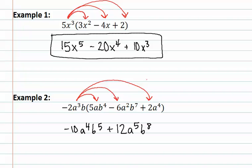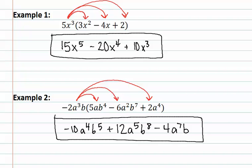We then distribute to the very last term and we have negative 2 times a positive 2, which gives us a negative 4. We then have a to the third and a to the fourth, which gives us a to the seventh. Finally, we have one b from the beginning and there is nothing to add it to, so it just stays one b. This is our final answer as none of the terms has like terms.